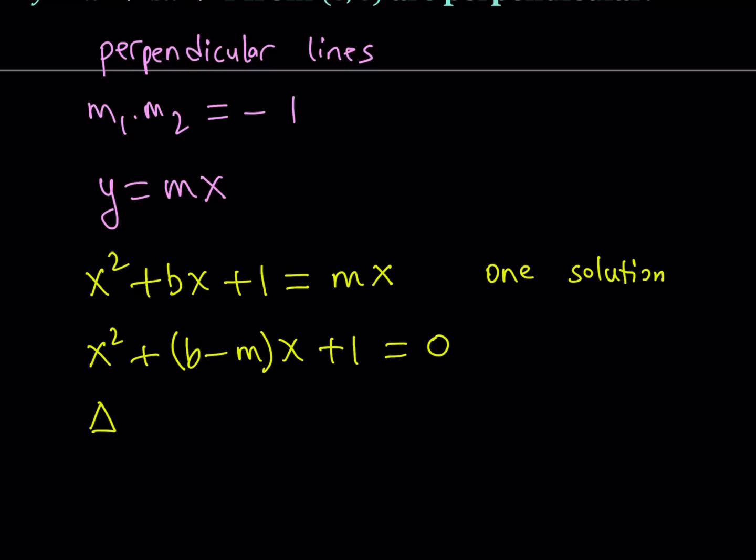Since there's only one solution, the delta, the discriminant, needs to be 0. And what is the discriminant for this quadratic? It's b squared minus 4ac. But remember, b is the coefficient of x. And a is the coefficient of x squared, which is 1 in this case. And c is the constant, which is 1 again. So we can write the discriminant as b minus m quantity squared minus 4 times 1, which is 4. And set it equal to 0.